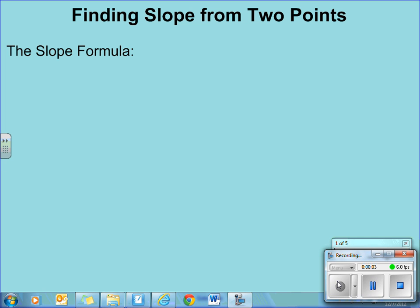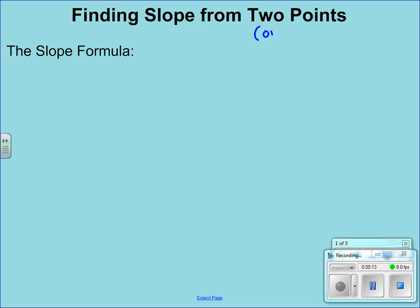This video is going to continue talking about slope, only now we're not going to be looking at a graph so much anymore, but we're just going to be focusing on two points. Now when we say finding the slope from two points, the two points just means two ordered pairs. And to do this we're going to use something called the slope formula.